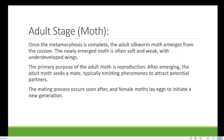Once metamorphosis is complete, the adult silkworm moth emerges from the cocoon. The newly emerged moth is often soft and weak with underdeveloped wings. You can see that once the pupa is fully formed, this capsule is broken, and from the broken cocoon the adult silkworm emerges. This moth is very weak — its wings are very soft — so it won't be able to fly for some time.